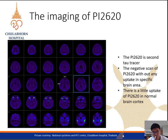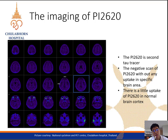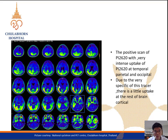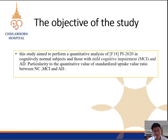On the other hand, due to the very high specificity of PI2620, there is little to almost no uptake in the brain for normal subjects — a good example of the subtle retention to normal brain tissue. This is a positive patient example where you can clearly see high-intensity uptake at the temporal, parietal, and occipital regions, while there is almost no uptake in the rest of the cortical brain.